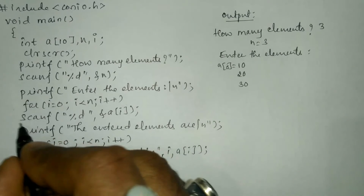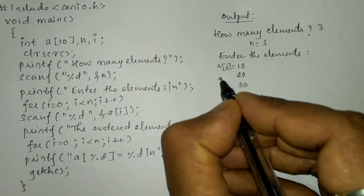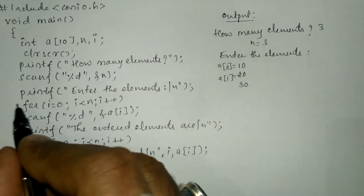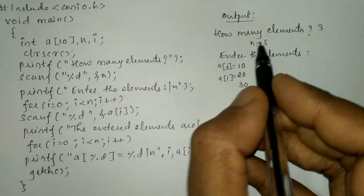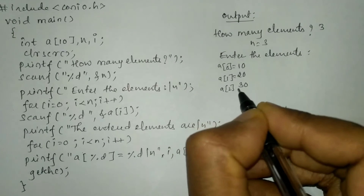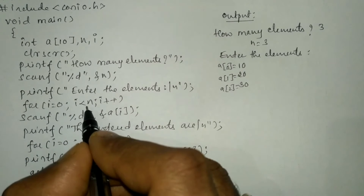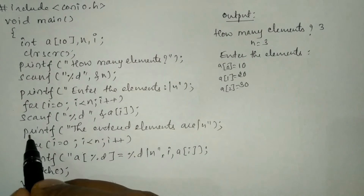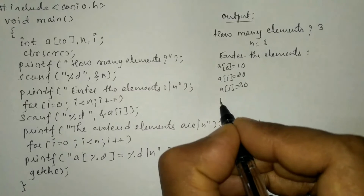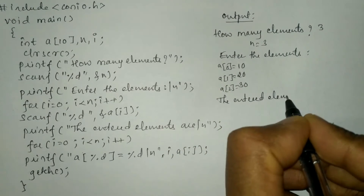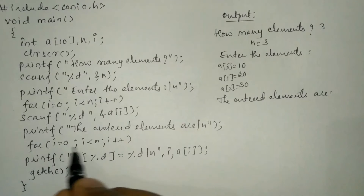For i equals 0, a[0] is holding value 10. Control transfers back to the for loop by incrementing i by 1. 1 is less than 3, so the condition is true, and it receives the next element: a[1] equals 20. Again i increments to 2; 2 is less than 3, condition is true, so a[2] equals 30. i increments to 3; 3 is less than 3 — condition fails and the control comes out of the loop. The next statement 'the entered elements are' gets printed and the cursor moves to the next line.